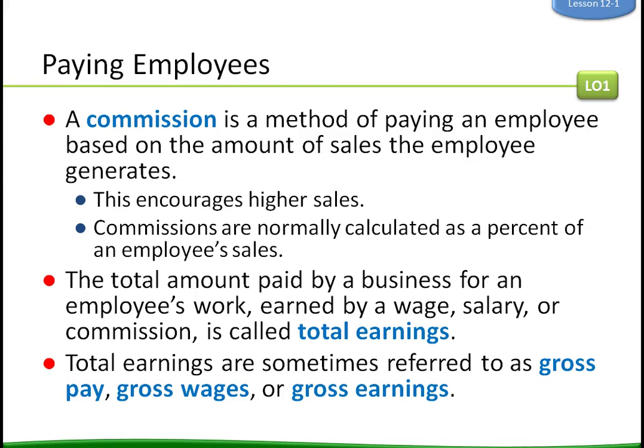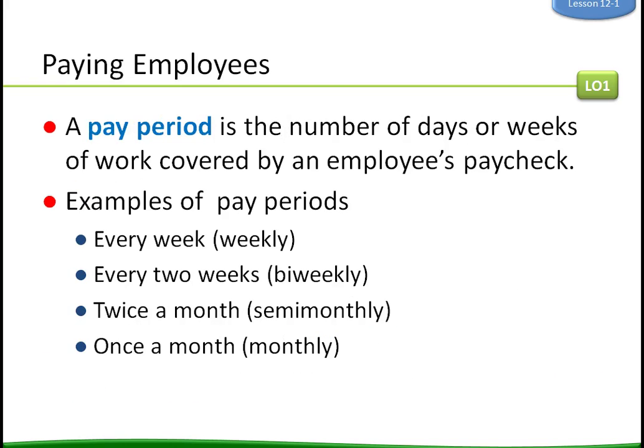Commissions are normally calculated as a percent of the employee's sales. So if you sell a hundred thousand dollars worth of equipment, you'll get paid a percent of that value. The total amount paid by a business for an employee's work — earned by wage, salary, or commission — is called total earnings, sometimes referred to as gross pay, gross wages, or gross earnings.